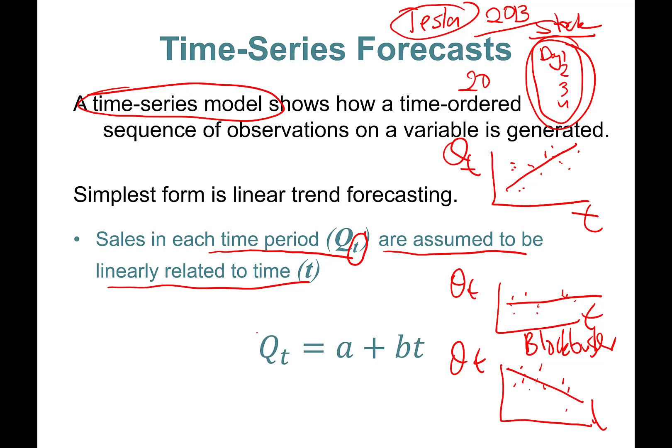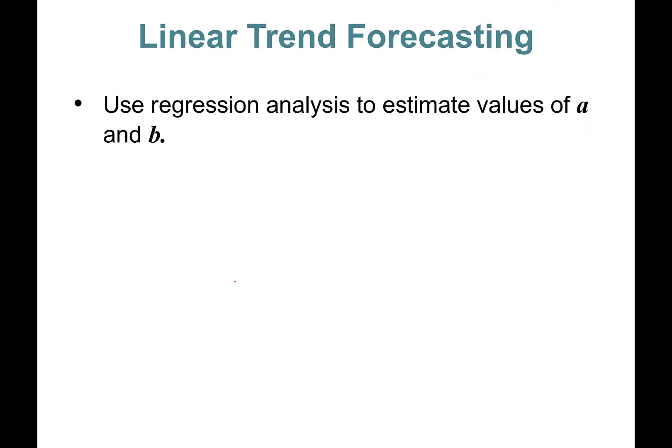The simplest form is Qt, sales as a function of time trend. You literally create a T variable: one, two, three, or you can put years, it doesn't matter. It just needs to be changing each period. Delta T is by one period, whatever that period is.